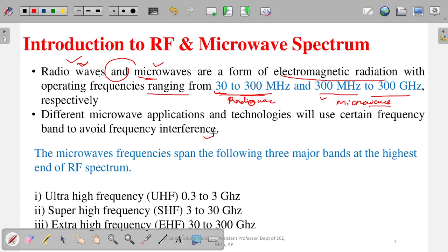Different microwave applications and technologies use certain frequency bands to avoid frequency interference. The full microwave range of 300 megahertz to 300 gigahertz is a very large frequency span, so these frequencies are divided into smaller spectrums and each spectrum is allocated to particular applications — satellite, mobile TV, mobile communication, FM radio — to avoid interference. Interference occurs when two waves at the same frequency propagate simultaneously, causing noise and data loss.